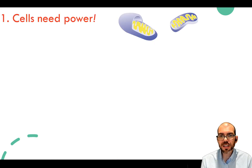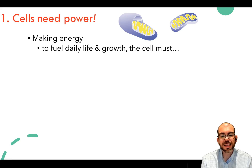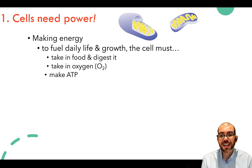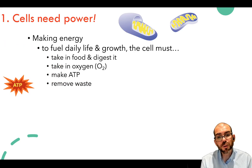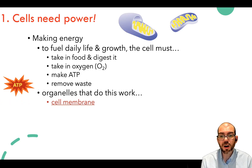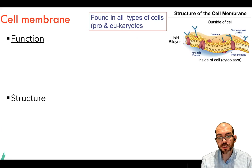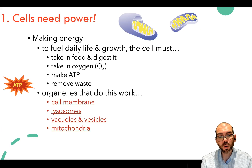Cells need power—they need it to make ATP, to fuel their daily life, for growth, to digest, take in oxygen, make ATP, and remove waste generated in the process. The main organelles that carry out this job are the cell membrane, lysosomes, vacuoles and vesicles, the mitochondria, and chloroplasts.